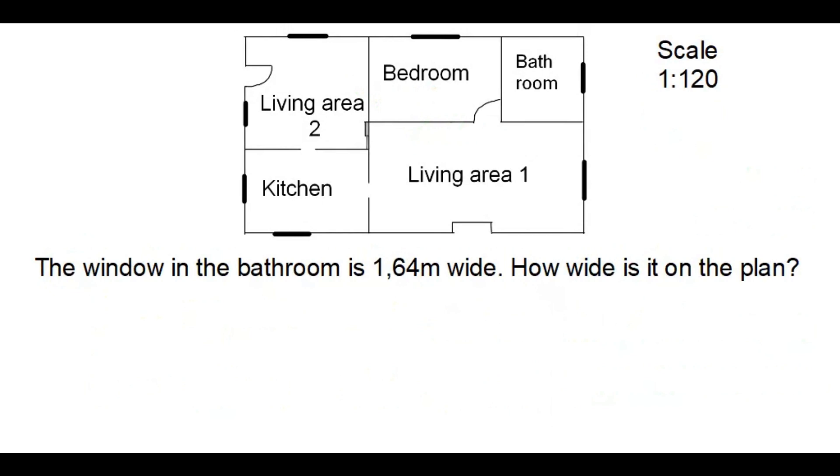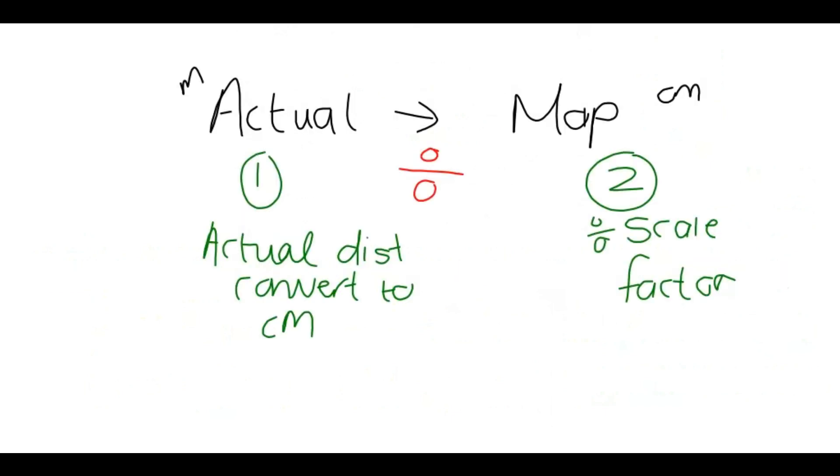The last example here is when you want to go. The window is 1.64 meters wide. So this is the actual distance. And you want to know the smaller distance on the plan or the map. So you're going from actual to map. And first we need to get that converted to centimeters, then divide by the scale factor.